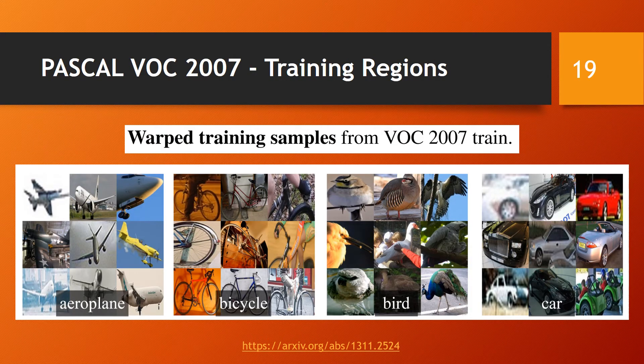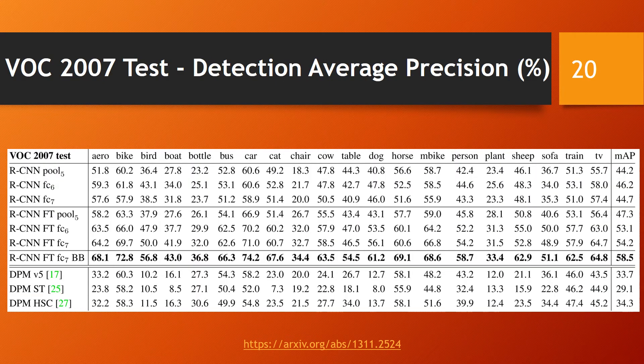These are random samplings of warped training regions from the VOC 2007 dataset. All design decisions and hyperparameters were validated on this dataset. The detection average precision on the VOC 2007 test set using RCNN variants is displayed here. It contains the last three layers of the RCNN variants. DPM methods are shown as a baseline. As seen, all RCNN variants significantly outperform the three DPM baselines.